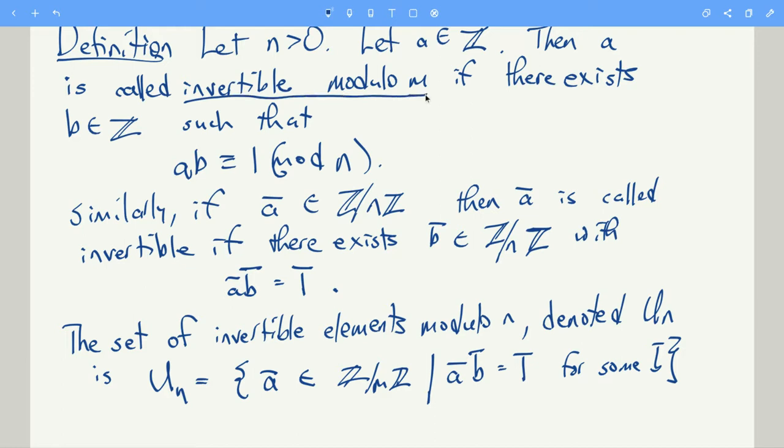So we could say that a is invertible modulo m if there exists an integer b such that ab is congruent to 1 modulo n. Here, this should be n, sorry.